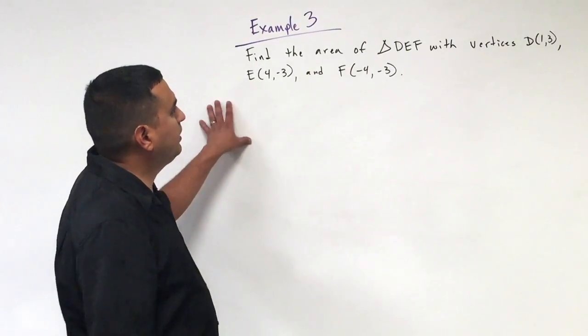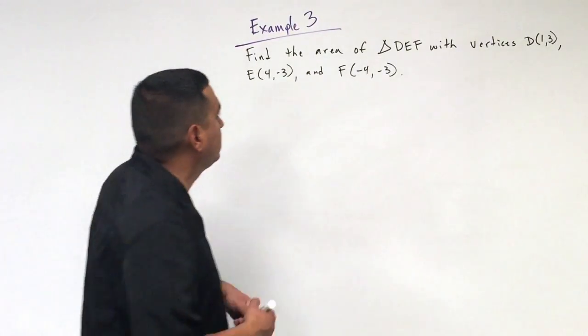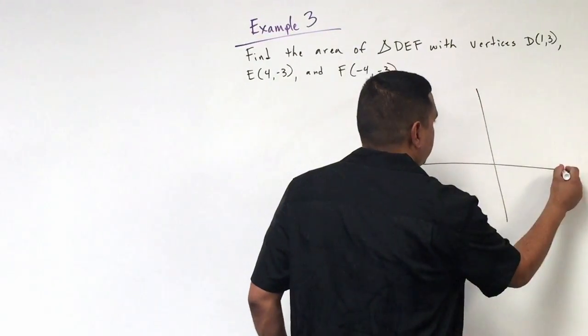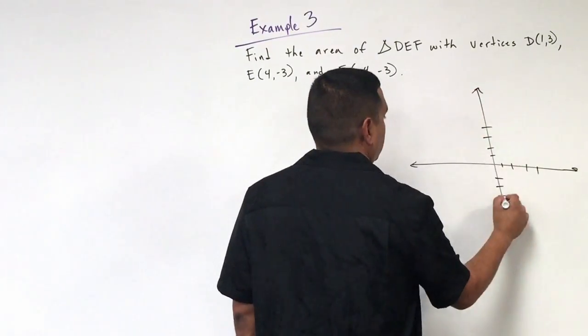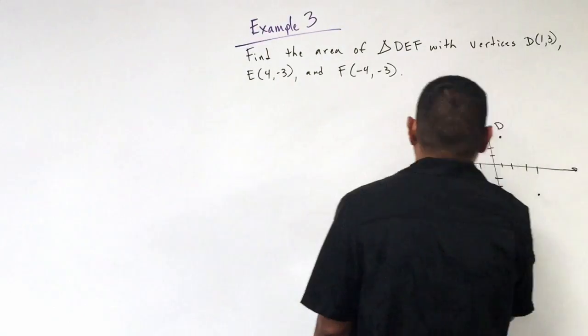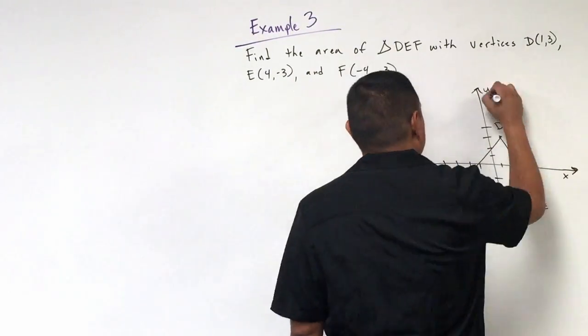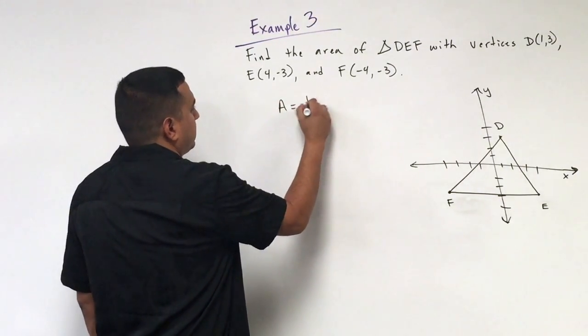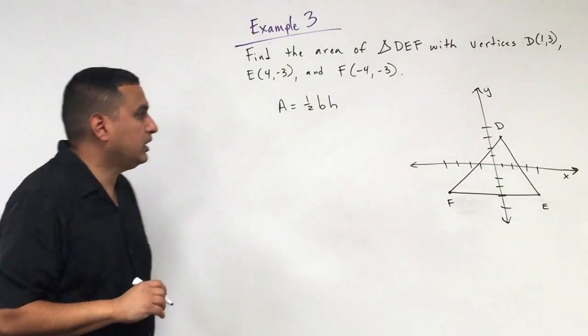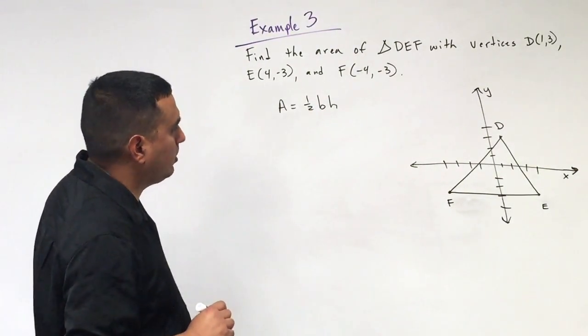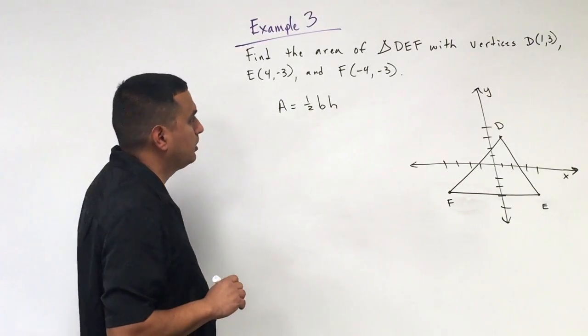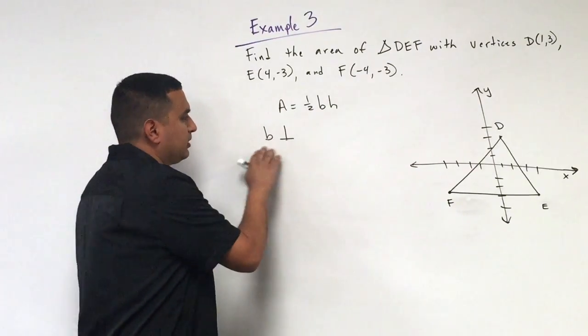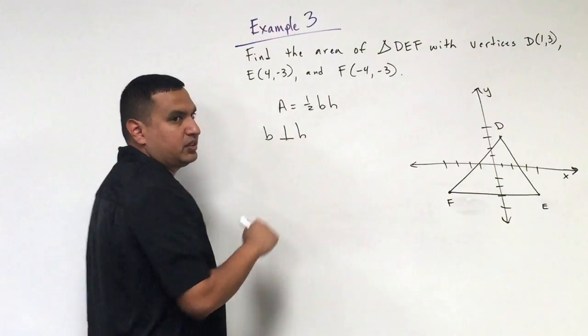Here we have an example of number three. It says find the area of triangle DEF, and then they give us these points. So, kind of like before, let's graph it, see what it looks like to get an idea of what we have to do. All right, so here's our graph. So remember that the area of a triangle is going to be one half base times height. Now, remember that the base and the height are always perpendicular to each other. So I'm going to go ahead and give you the symbol. The symbol for perpendicular is that it makes an upside down T. That means that they intersect at a right angle.